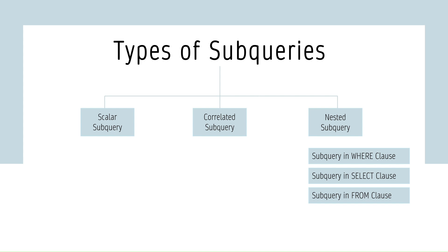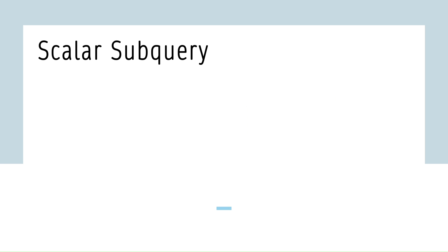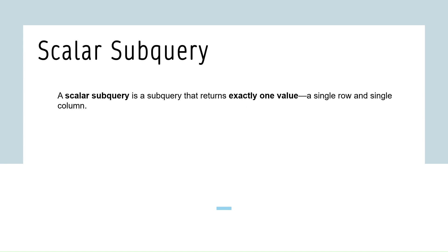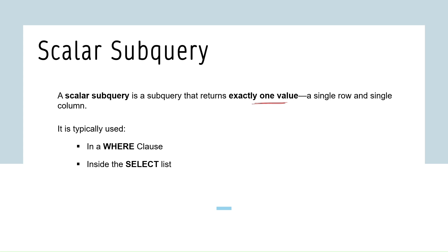Type one is the scalar subquery. A scalar subquery returns exactly one value — a single row and a single column. It is typically used in a WHERE clause, inside the SELECT list, or within a CASE expression.